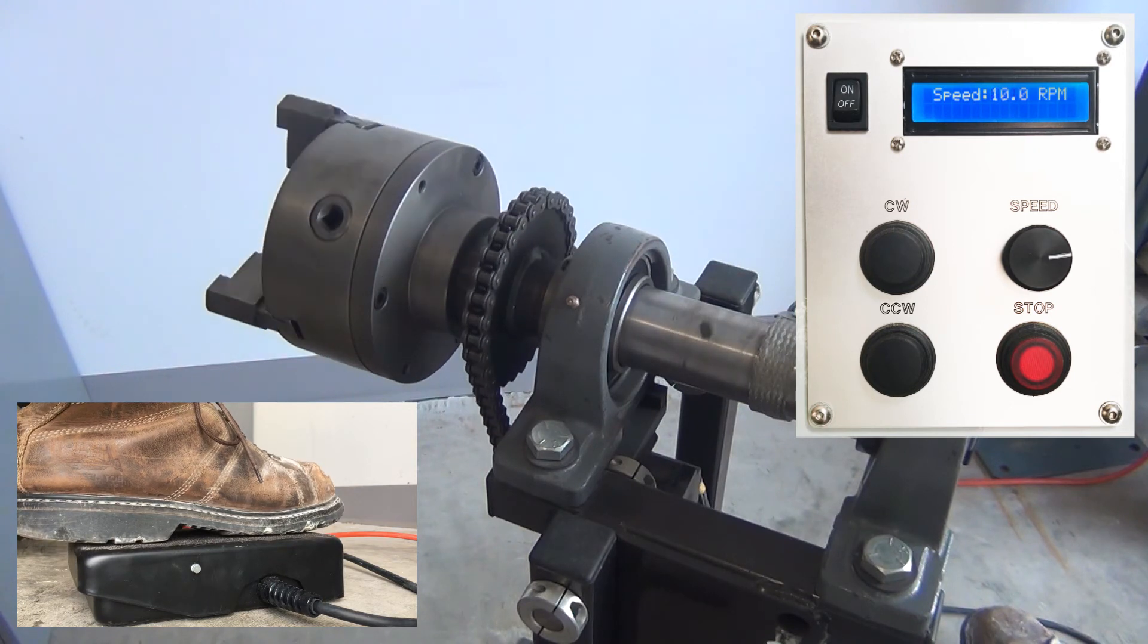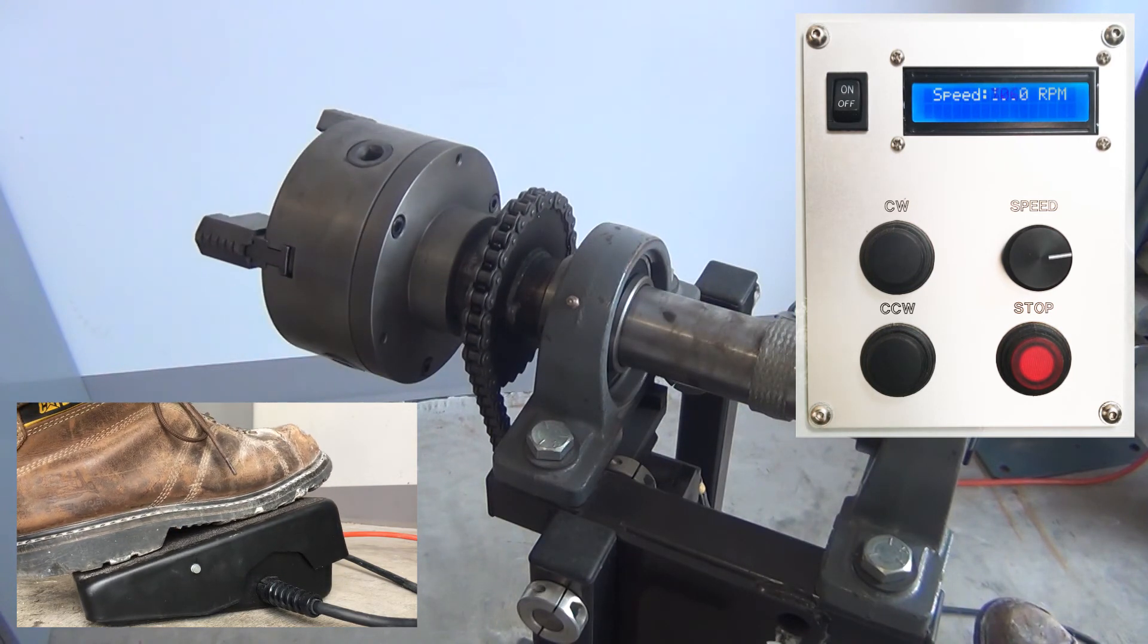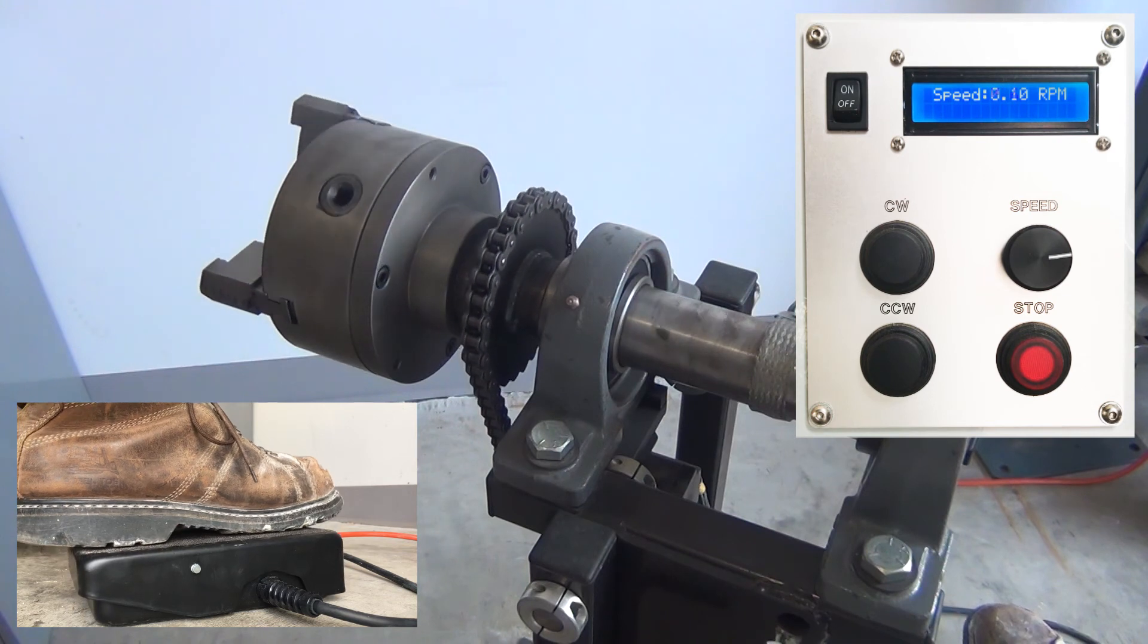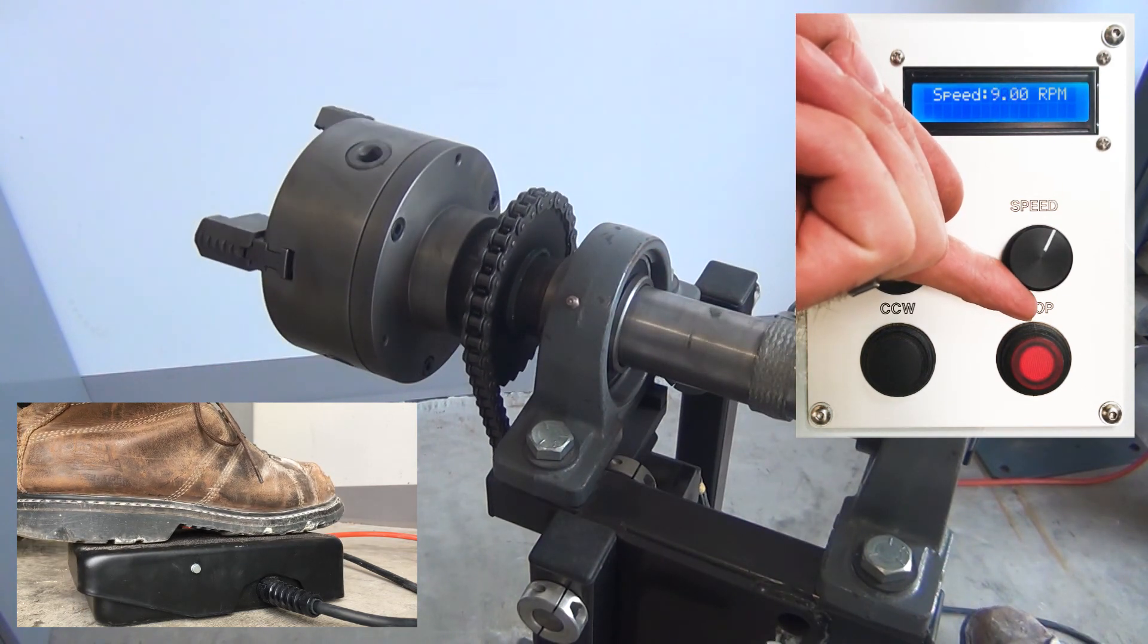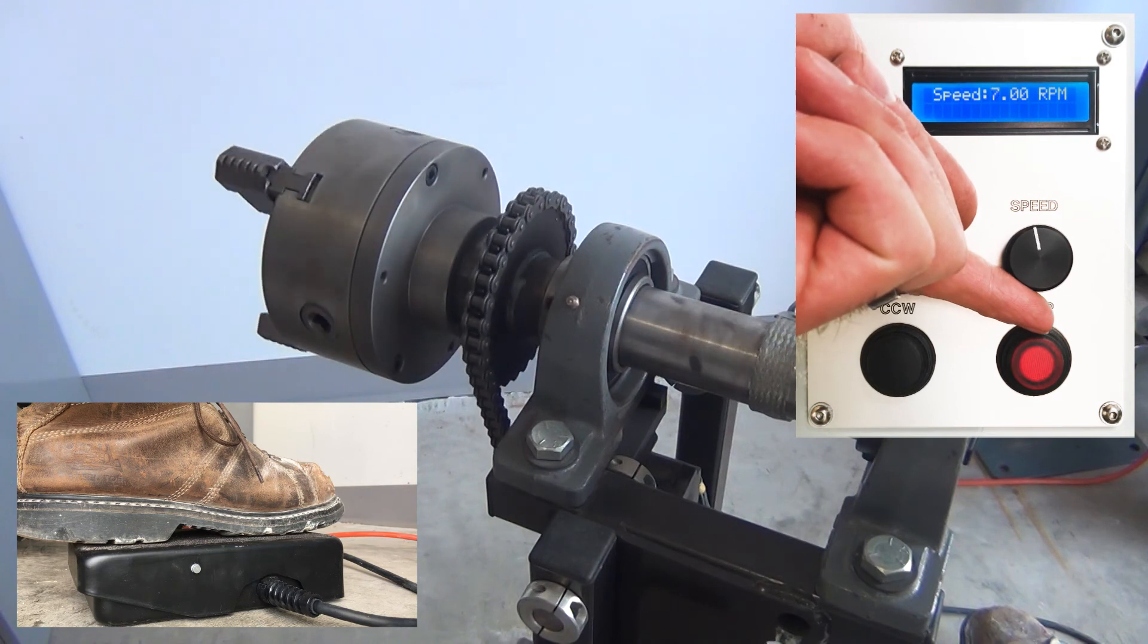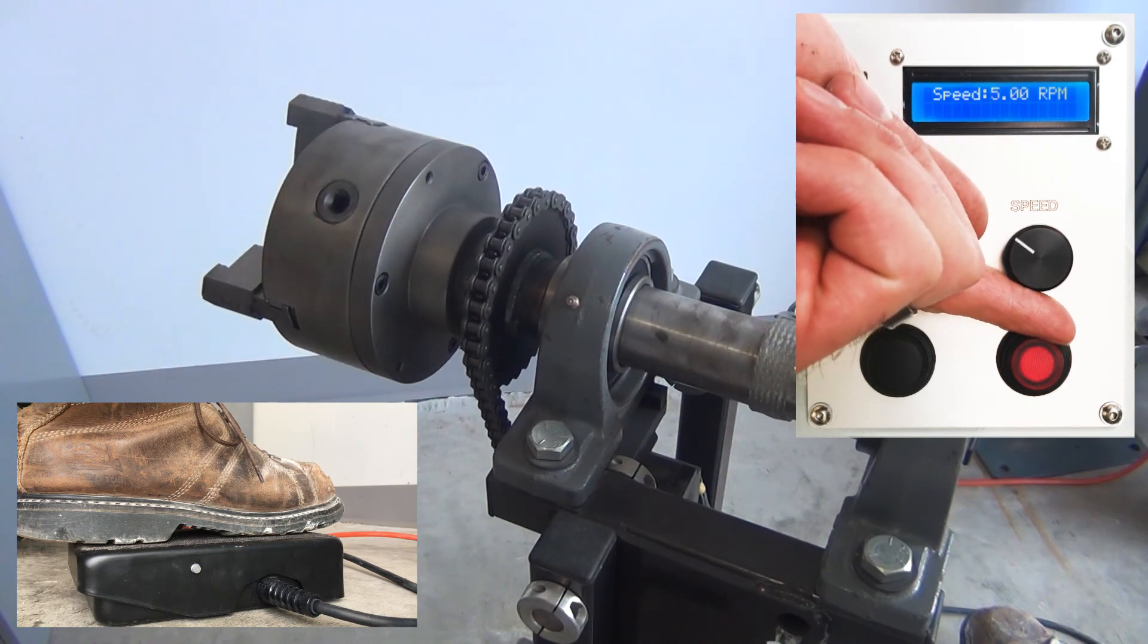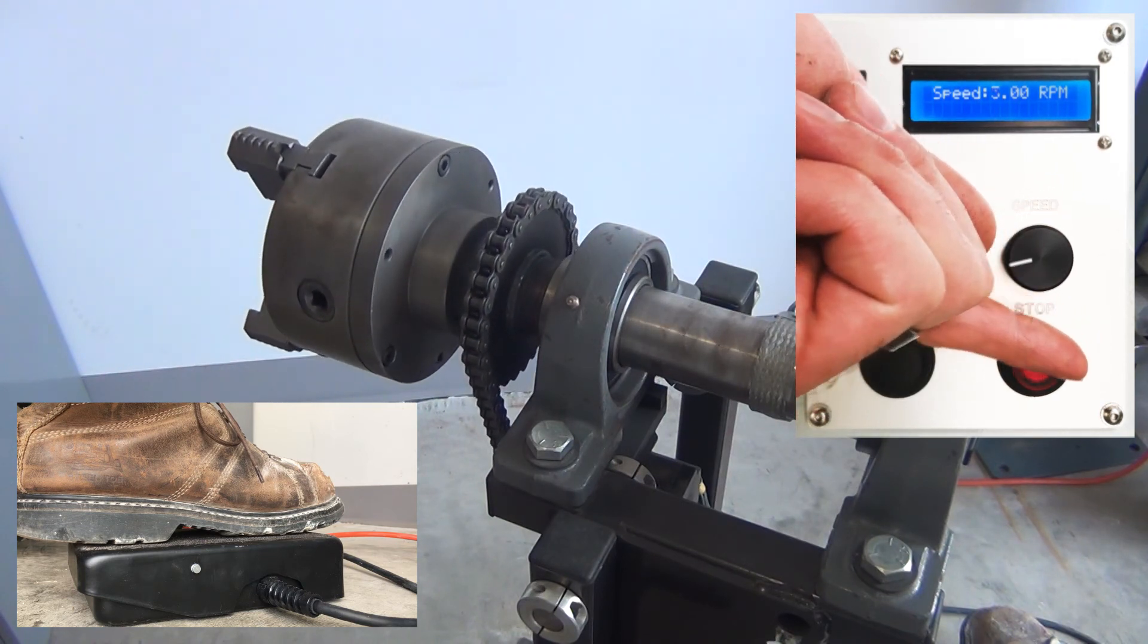I do include information in the plans so that whoever purchases them can change these ranges to suit their particular needs. It's not too hard to manipulate some of the numbers to change these speed ranges pretty easily, or remove some of them altogether. It just depends on personal preference at that point.